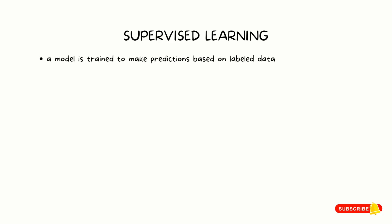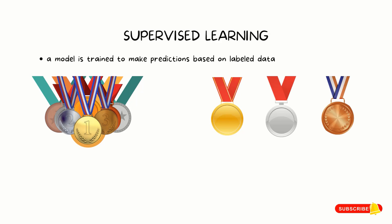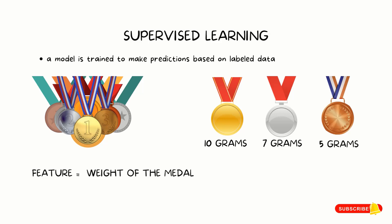Let's look at supervised learning. In supervised learning, a model is trained to make predictions based on labeled data. Let's say a friend gives a stack of medals of three different materials: one gold, one silver, and one bronze. Each medal has a different weight — gold weighs 10 grams, silver weighs 7 grams, and bronze weighs 5 grams. If our model is to predict the material of the medal, the weight becomes the feature of the medals, while the material becomes the label. When we feed this data to the machine learning model, it learns which feature is associated with which label.